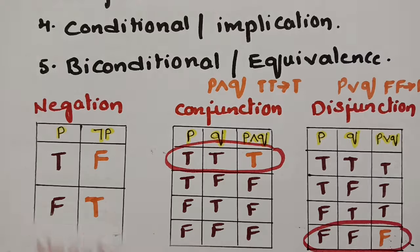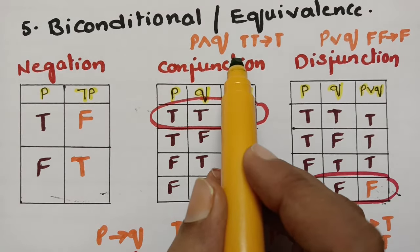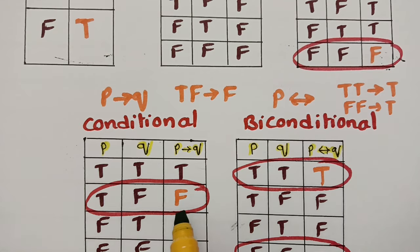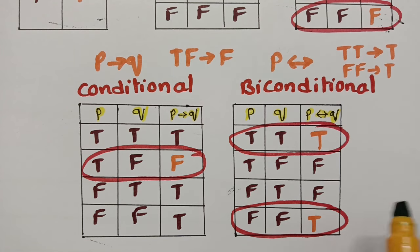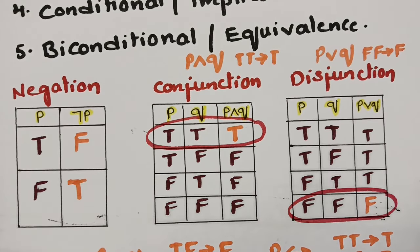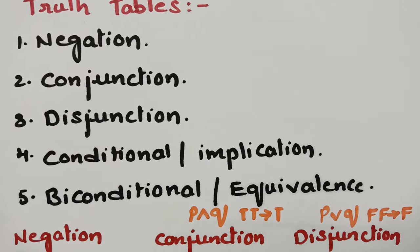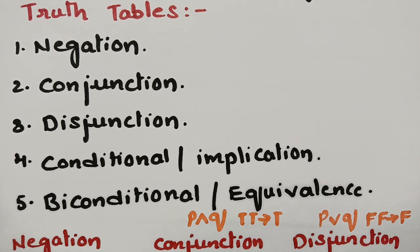I have given you notes for this. Please follow these steps and tables. For conjunction: double T gives T. For disjunction: double F gives F. For conditional: T and F gives F. For biconditional: two T's or two identical values of P and Q give T, and the rest are opposite. These are the five truth table values. If you like this video, please subscribe and share it with friends and siblings. Stay connected — I will be uploading many more videos in this series. Until then, bye.